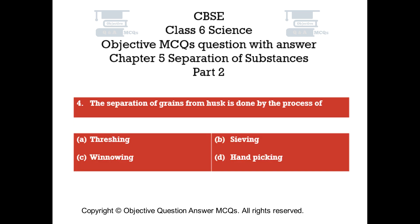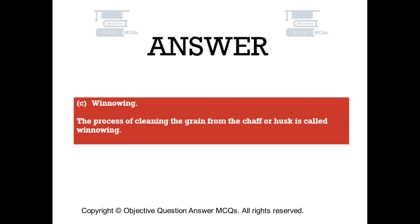Question number 4. The separation of grains from husk is done by the process of: Option A, Threshing. Option B, Sieving. Option C, Winnowing. Option D, Handpicking. The right answer is Option C — Winnowing. The process of cleaning the grain from the chaff or husk is called winnowing.